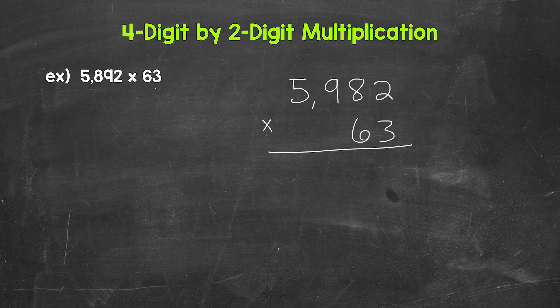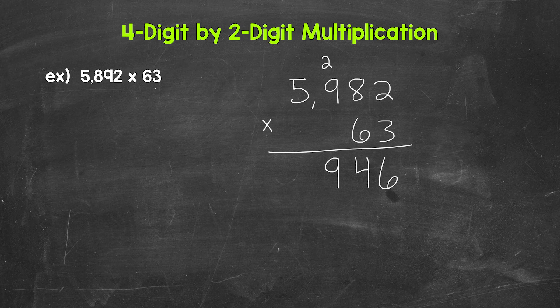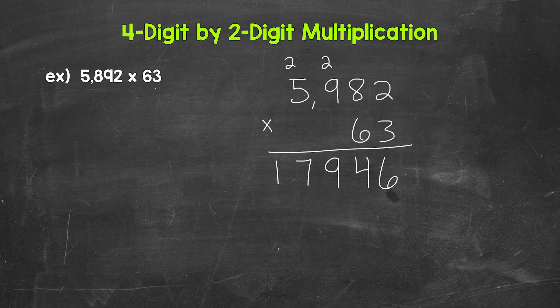We'll start with the 3 in the ones place and do 3 times 2. That gives us 6. Then we do 3 times 8, which is 24. So we write our 4 and carry the 2. Now we do 3 times 9, which is 27, plus that 2 is 29 — write the 9 and carry the 2. And next, we do 3 times 5, which is 15, plus that 2 is 17. So we write our 7, and then there aren't any more places to the left, so we bring that 1 straight down. So 5,982 times 3 gives us 17,946.